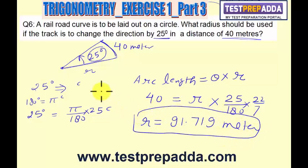So the question is a railroad curve is to be laid out on a circle. What radius? 91.719 meters should be used if the track is to change the direction by 25 degrees in a distance of 40 meters. Now I'll take another question here.